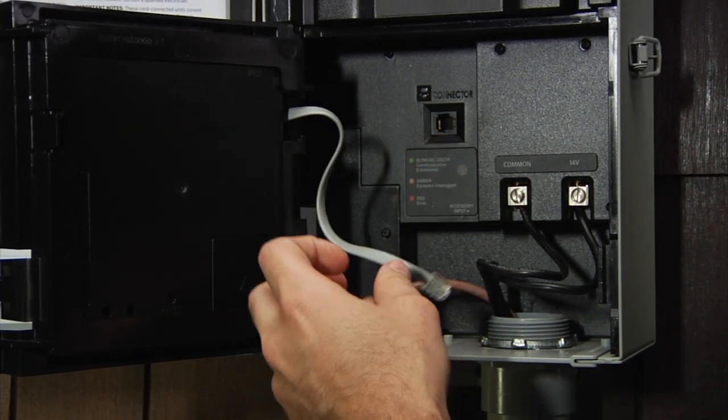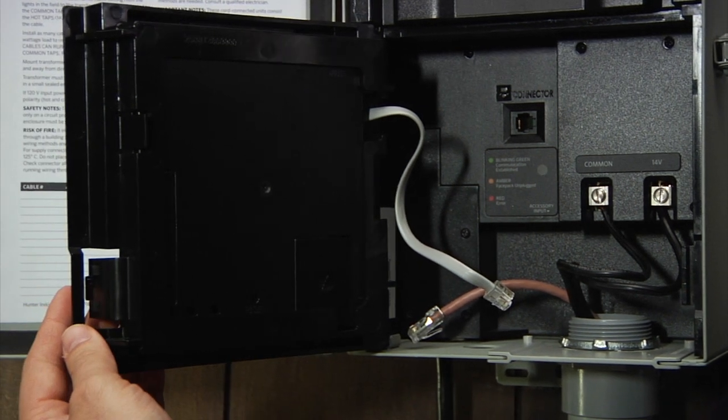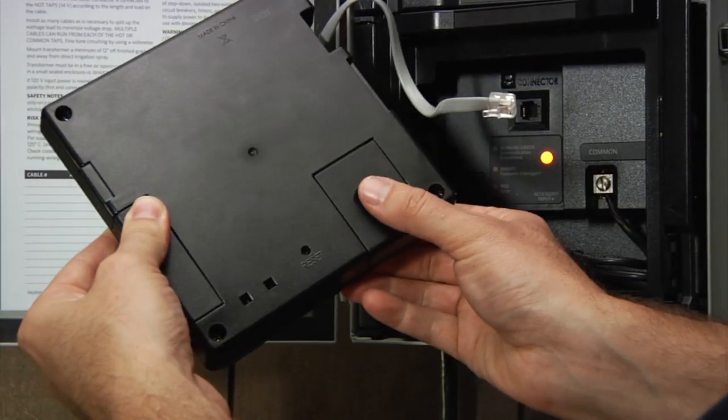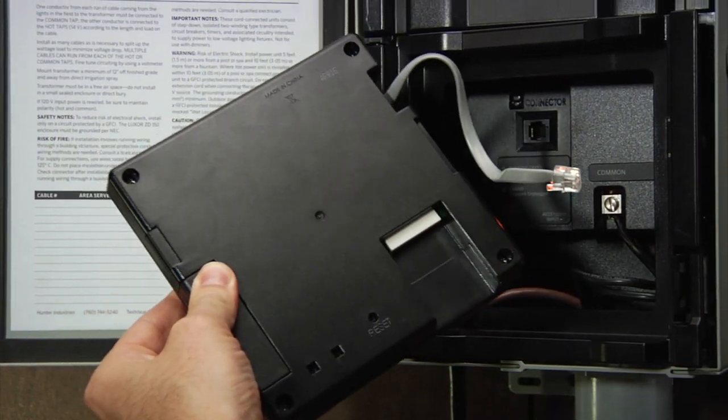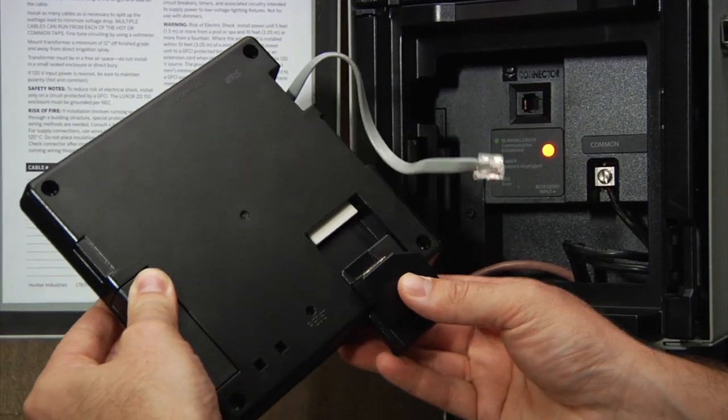Always remove power to the face pack by disconnecting the communication cable when changing out accessories. Once power is disconnected, remove the face pack from the bezel, slide the plastic cover off, and insert the LAN device completely into the accessory port.